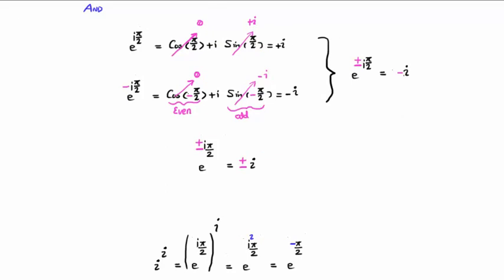We can also look at the half angles of pi over two. And we can say that e to the i pi over two is simply iota, and e to the minus i pi over two is minus iota. Putting those together, e to the plus minus iota times pi over two is plus minus iota. We can take iota to its own power and we see that it's e to the minus pi over two.